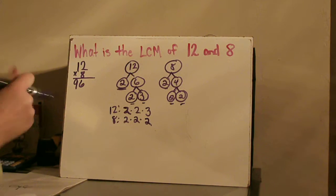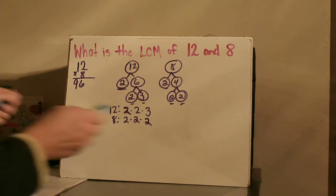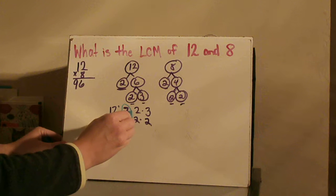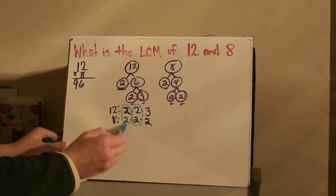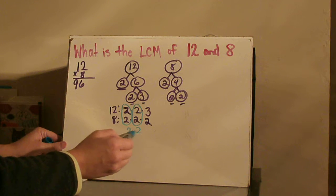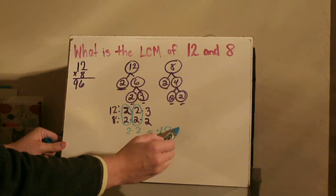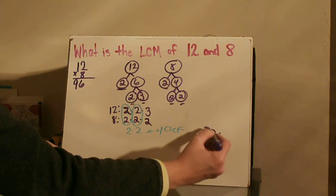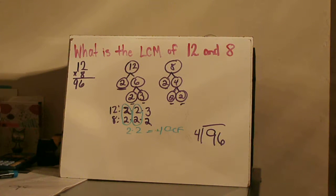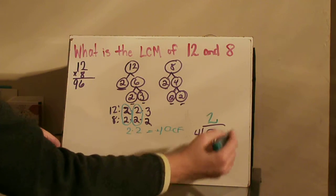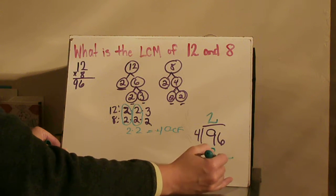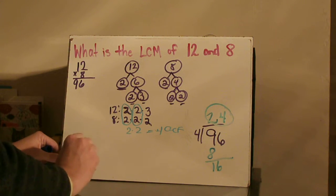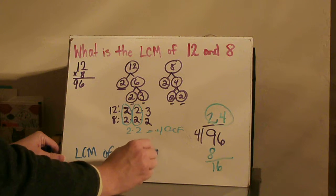If you don't remember how to find your greatest common factor using the tree method, we do have a video on that, so you may want to refresh on the GCF. Now I look at my two rows and ask what prime factors appear in both rows. I see a 2 in both rows and another 2. Since I see one set of twos, I multiply that by the other set — 2 times 2 equals 4. So 4 is my GCF. Step three: take my product of 96 and divide by the GCF of 4. 4 goes into 9 twice (that's 8), 9 minus 8 is 1, bring down the 6, 4 goes into 16 four times. So my LCM is 24 — the LCM of 12 and 8 is 24.